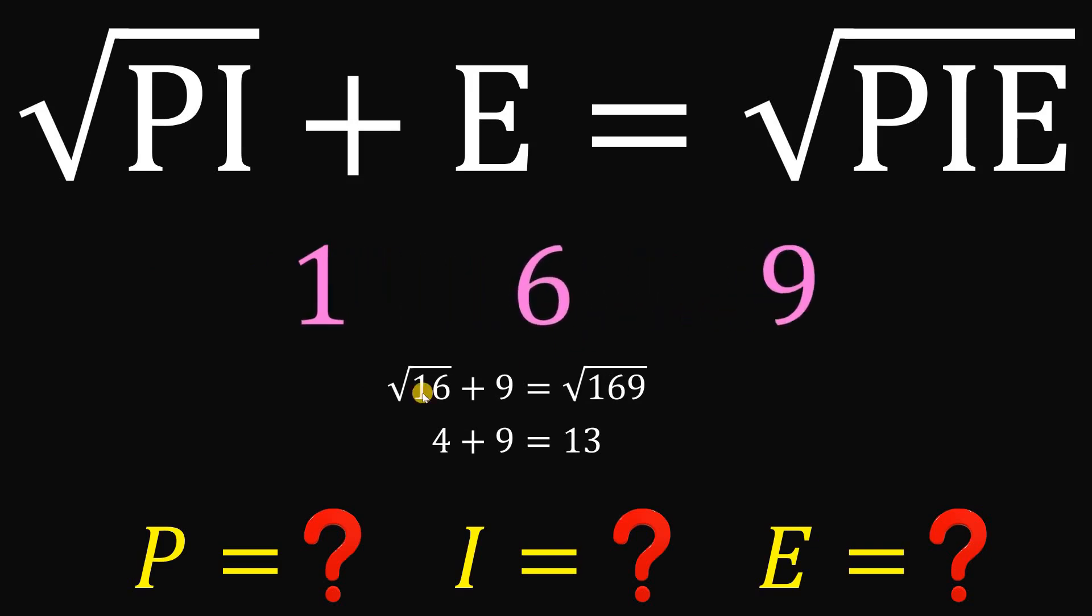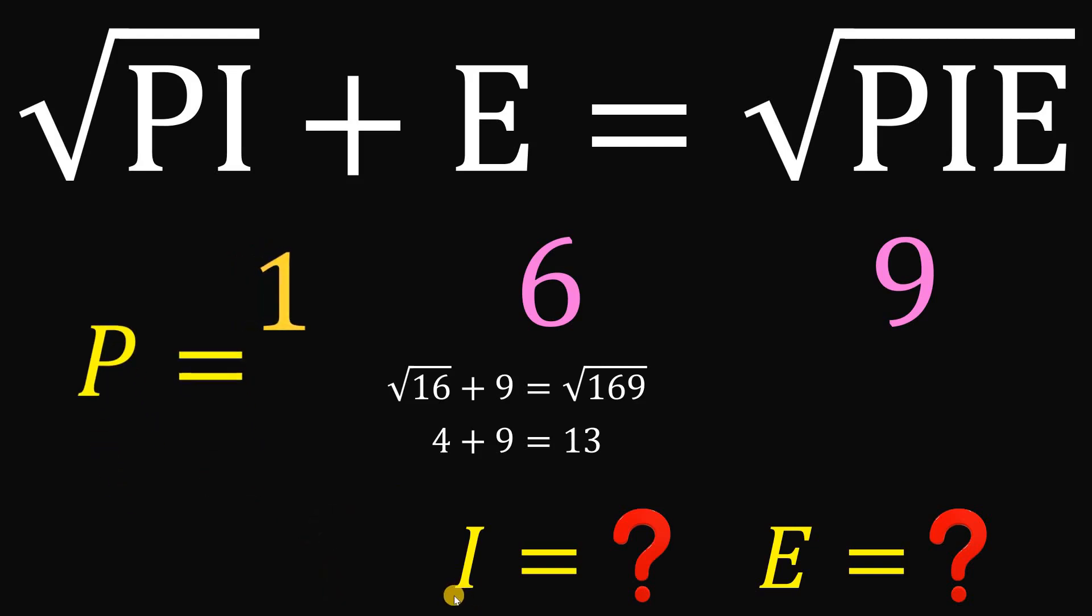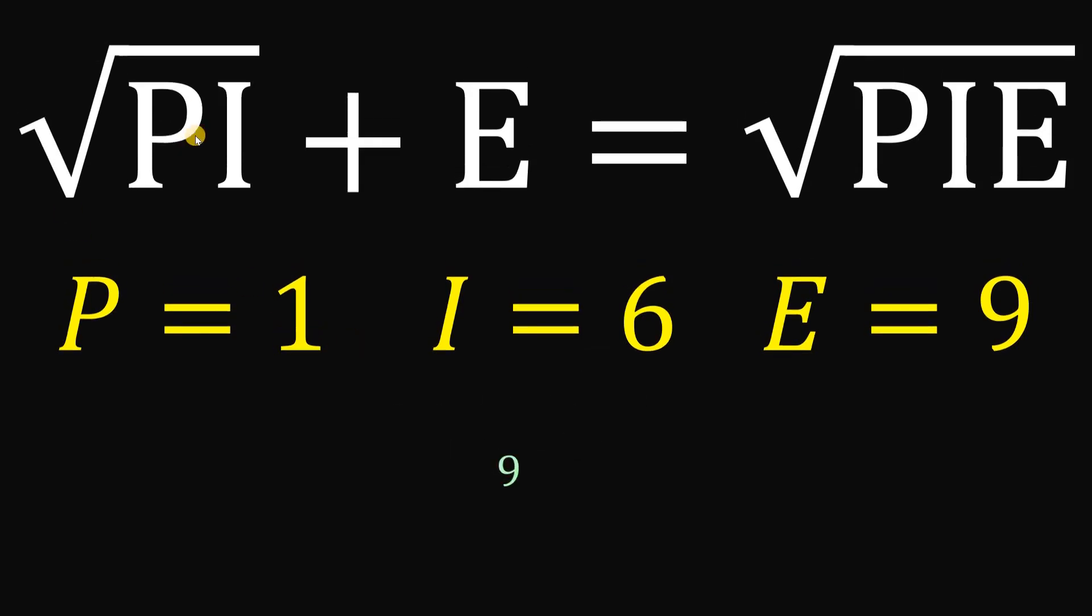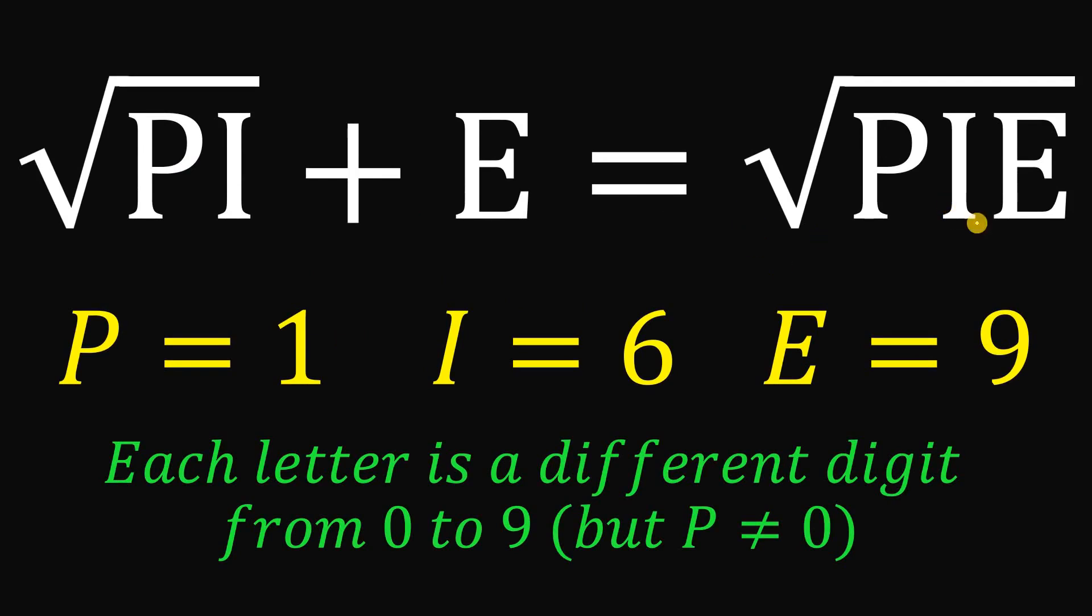Wherein, this P is equal to 1, this I is equal to 6, and this E equals 9. And that is the answer to this question. Therefore, given this equation square root of PI plus E equals square root of PIE, where each letter is different digits from 0 to 9, and P is not equal to 0. Then the value of P, I, and E that satisfies this equation must be equal to 1, 6, 9. And as always, we are done.